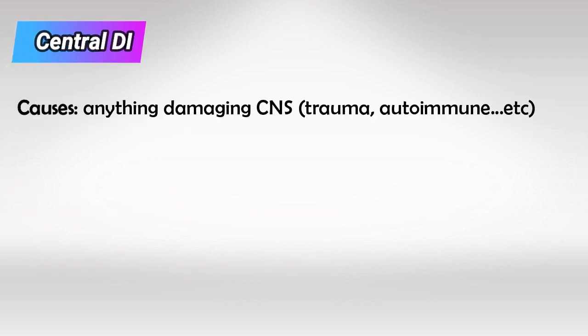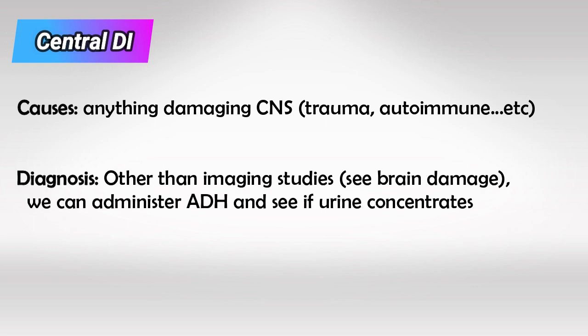The cause for central diabetic insipidus is basically anything that can damage the brain and decrease the secretion of ADH. The diagnosis is made by imaging studies where we see damaged brain, or by administering ADH and reversing the pathophysiology. If administration of ADH results in concentrated urine, this is the central type.